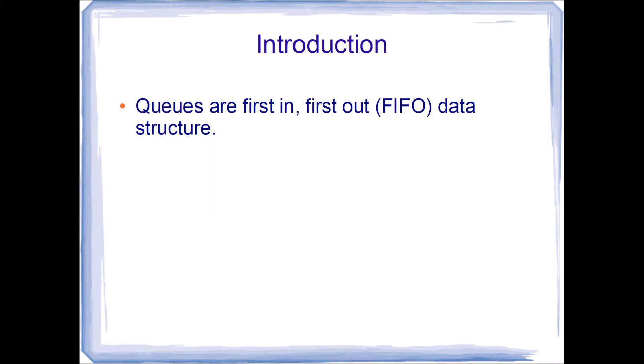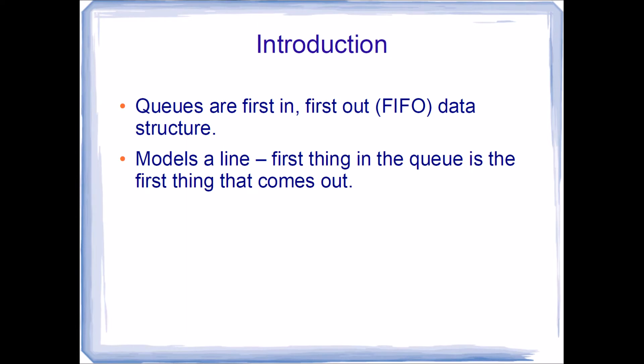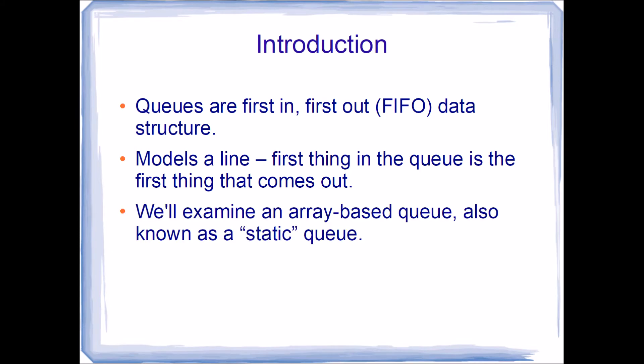This means that the first value that we place into it is going to be the first value that comes out. These are used to model things like a real world analogy — a line at a grocery store. The first person that enters the line is going to be the first person that comes out. Similarly with a queue data structure, the first item we store is always going to be the first item that comes out.